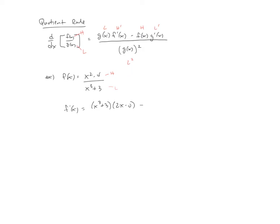And then we have minus the high, derivative of the low. The derivative of the low would be a 3x². And then plus 0. All over low, low. So for this one, it's just going to be (x³ + 3)².